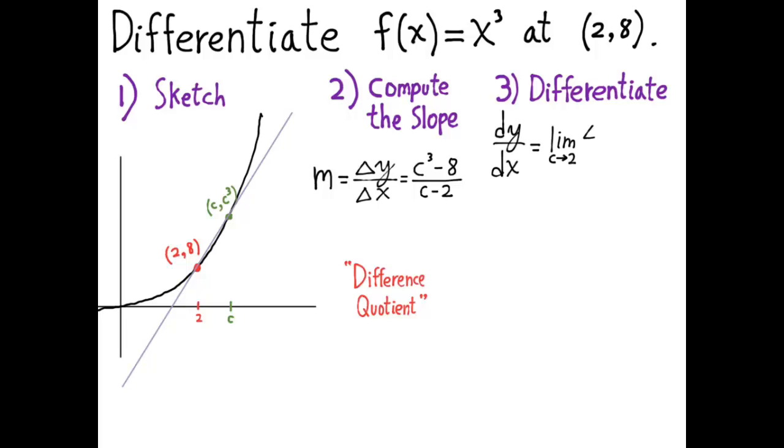So, we say dy over dx is the limit as c approaches 2, so the two points are going to merge to 1, of delta y over delta x, and the notation for the result of differentiation is dy over dx.